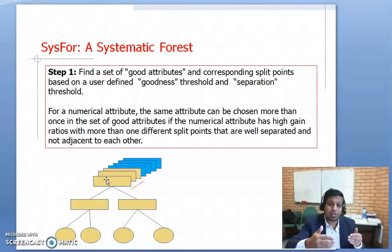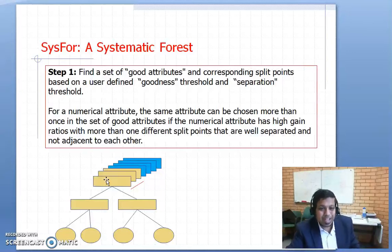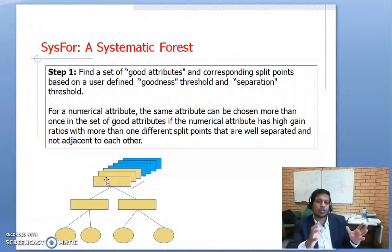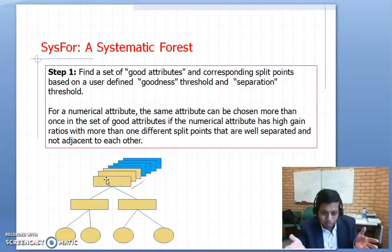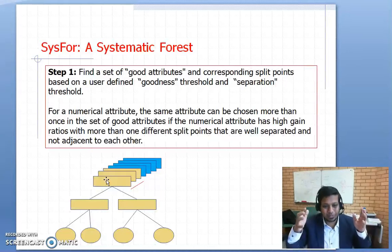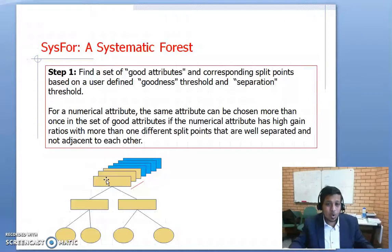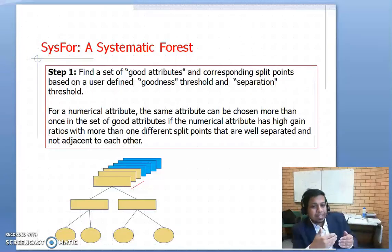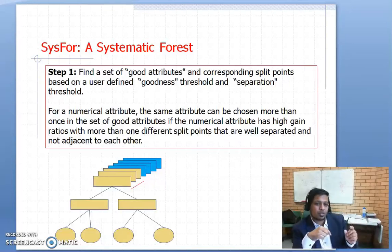If a data set has 20 attributes, the algorithm can pick the best attribute that classifies the data set. But it also knows the classification capacity of all other attributes. SIS4 takes advantage of that and ranks the attributes based on their classification capacity. It then picks a set of good attributes — not all the best, but good enough to classify the data set. It picks the best attribute from that set to build the first tree, with the rest of the nodes built using a traditional algorithm like C4.5 or CART.